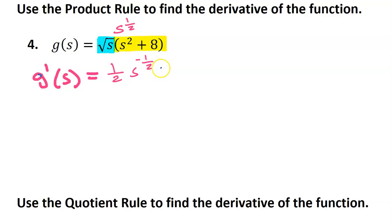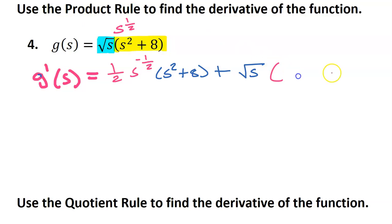Right now I'm going to leave the second function the way it is. Then I'm going to add, and the second time through I leave the first function alone — just leaving this as the square root of s — and now take the derivative of the second function. When you take the derivative of a sum, you can take the derivative of each term one at a time. So the derivative of s squared is just 2s, and the derivative of a constant is zero, so I'm not going to write anything for that.